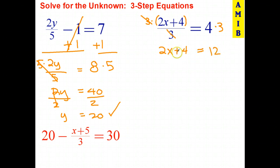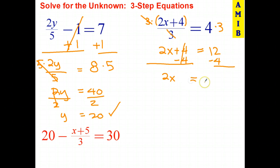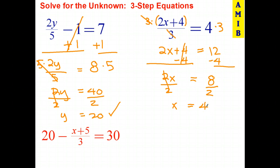I get 2x plus 4 is 12. Now we're going to undo the adding by subtracting 4. They cross out, and that leaves me with 2x equals 8. The last step — the opposite of multiplying by 2 is dividing by 2. They cross out, and 8 divided by 2 is 4. We can check this: 2 times 4 is 8, 8 plus 4 is 12, 12 divided by 3 is 4. So that does check.